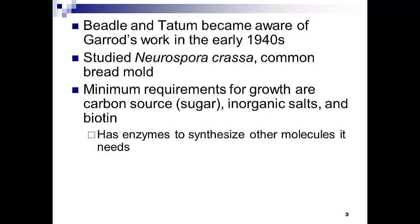The understanding that chromosomes are packaged into discrete units called genes was determined through a series of experiments, one of which we'll review here. Researchers worked in the early 1940s studying a common bread mold, looking at its minimum growth requirements: a carbon source (sugar), inorganic salts, and a cofactor called biotin. It turns out these molds have enzymes to synthesize everything else they need — all the proteins, fats, and other cofactors are produced by the enzymes contained within the mold.